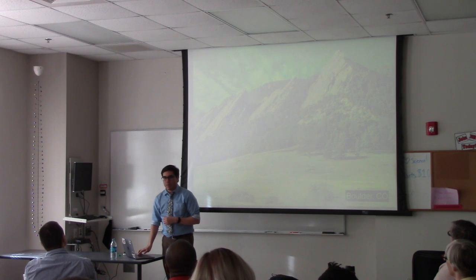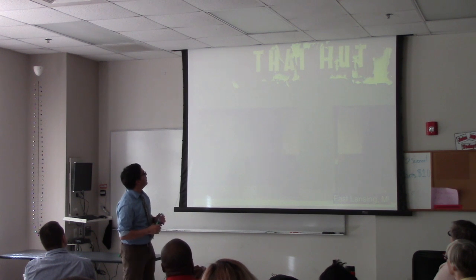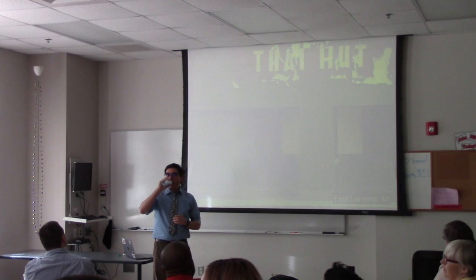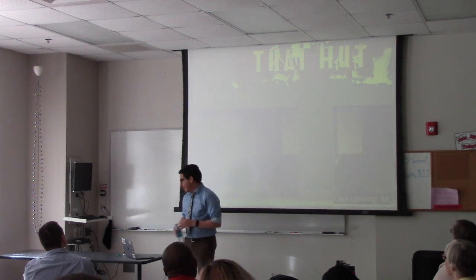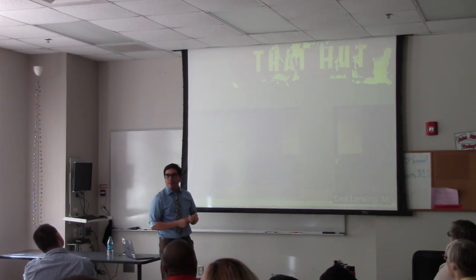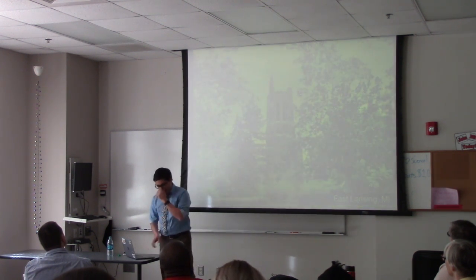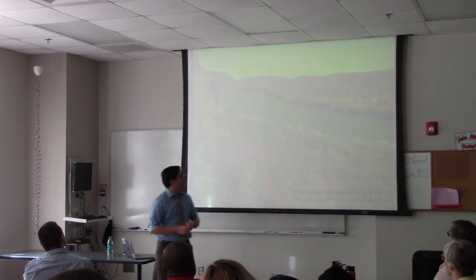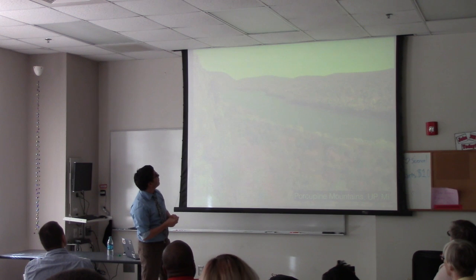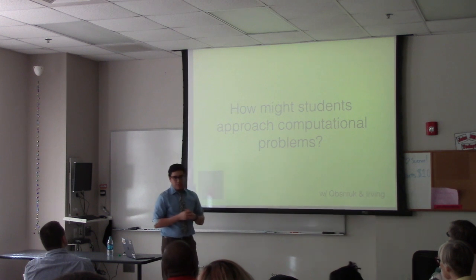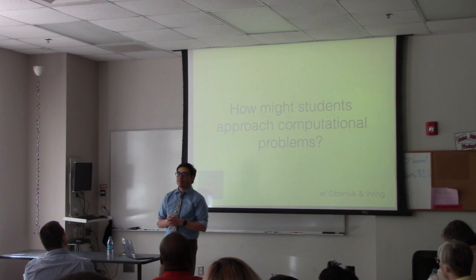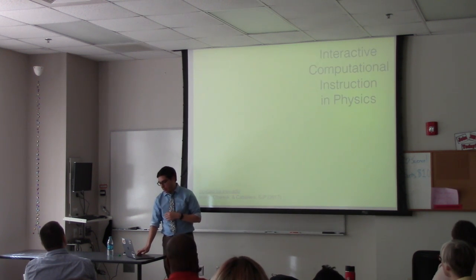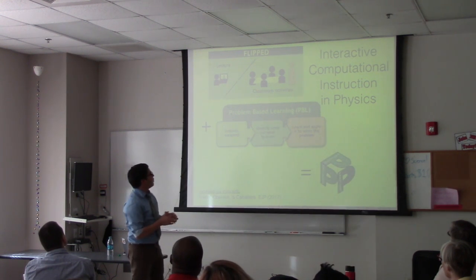Now I'm in East Lansing — this is the Thai Hut, which has since been torn down; it had plywood over the door for about 10 years. This is Beaumont Tower on campus, which is actually quite beautiful. At Michigan State, what we're starting to do is unpack how students approach these computational problems — not just that they're doing this stuff, but actually how they go about it. So we had to create a course to do this. It's an introductory course for science and engineering students, flipped in the sense that students do preparatory work outside of class, then do all their work in small groups in class. It's problem-based — when they're doing the computing part, they're focused on a contextual task.